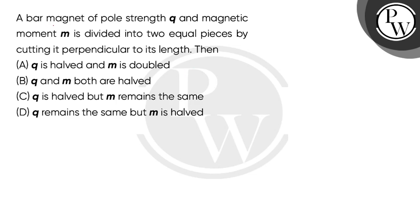So, let's read the question. A bar magnet of pole strength Q and magnetic moment M is divided into two equal pieces by cutting it perpendicular to its length.